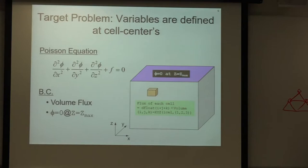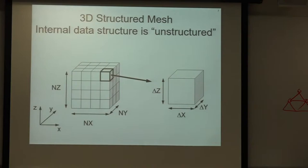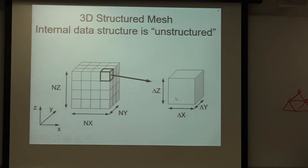The target problem has a simple shape and simple boundary conditions. The term F is something like a heat generation term — a function of the location of the cells. At the top surface (shown in purple), we apply Dirichlet boundary conditions where phi equals zero. We have a structured 3D mesh with nx, ny, and nz meshes in each direction, but the internal data structure is unstructured. The mesh size (delta x, delta y, delta z) can be varied, though in this class we mostly use unit cubes where all edge lengths are one.